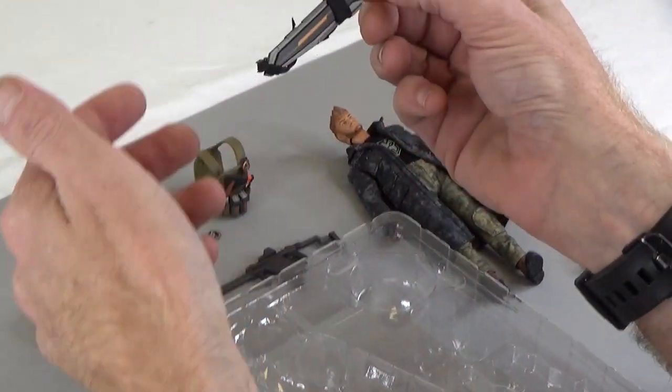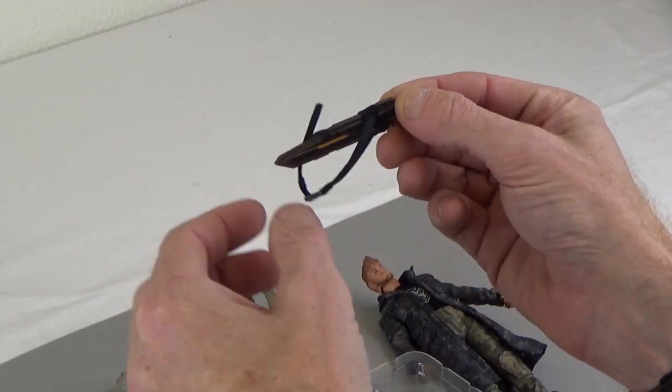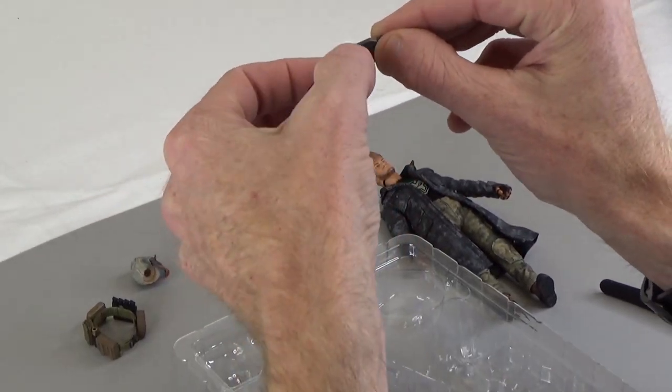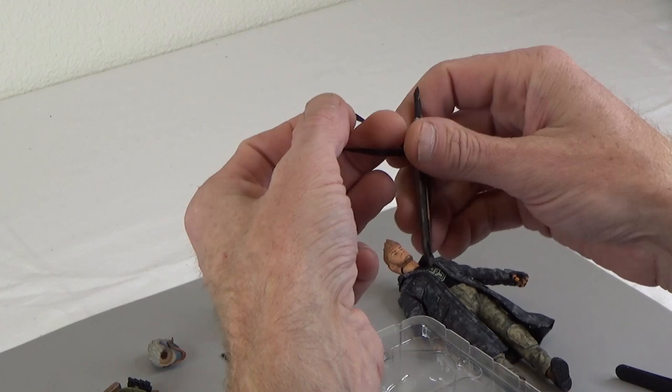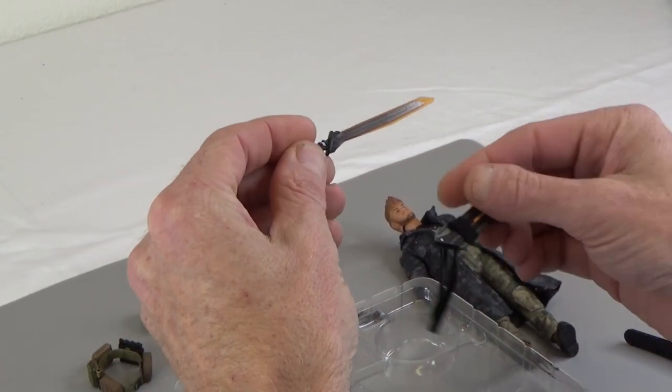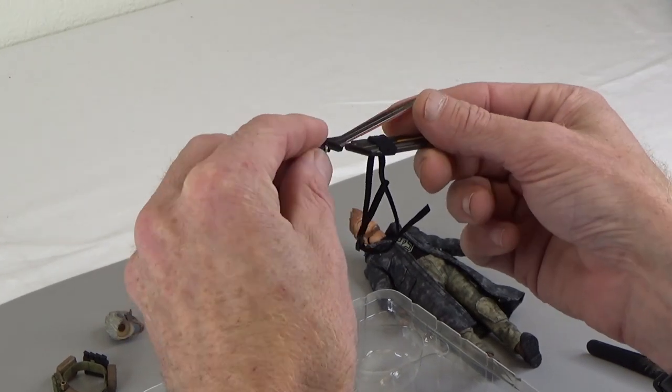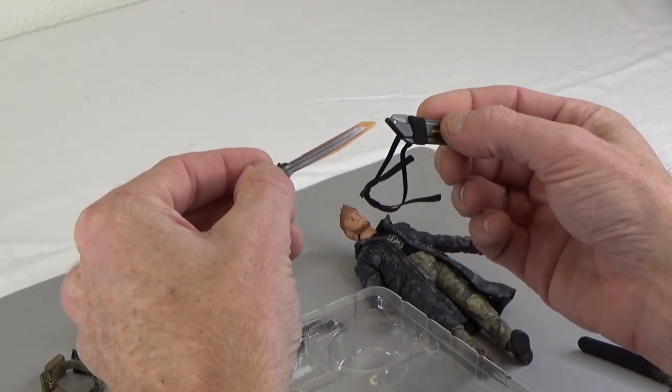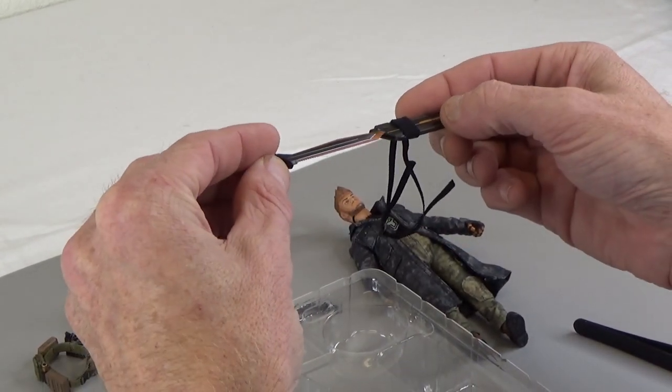Looks like we have a sword with a back strap. So this can go either around his waist or over his head around his shoulder. Super cool. Very sharp. This is made out of plastic. So you actually won't hurt yourself, hopefully.